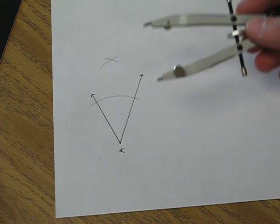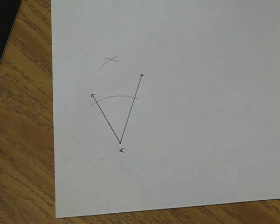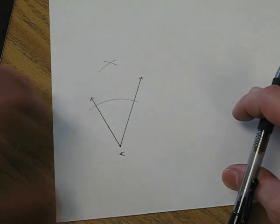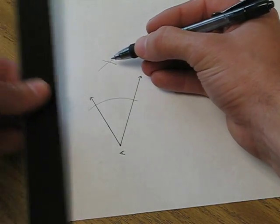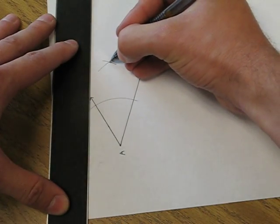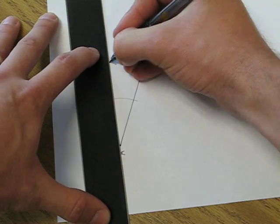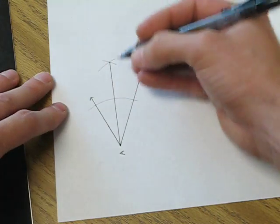then you need to change the radius of your compass. The final step would be to connect the vertex of our angle with the intersection point of our arcs. And this would be the angle bisector.